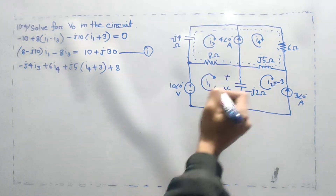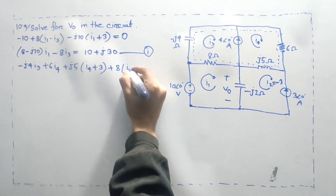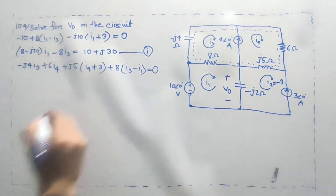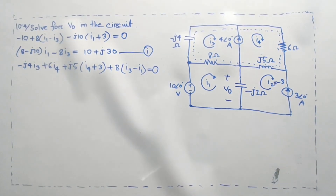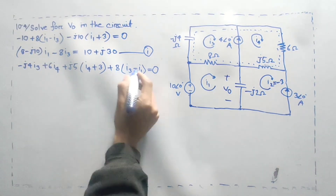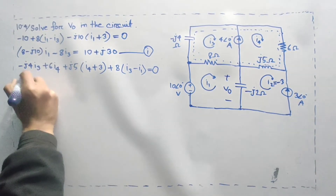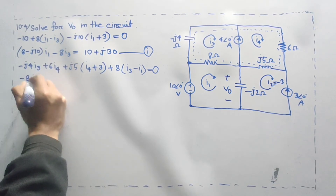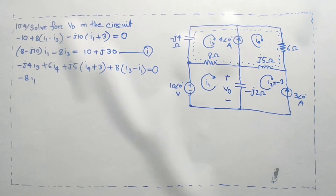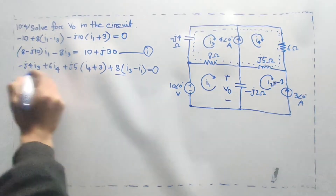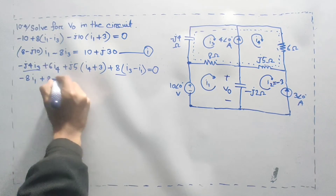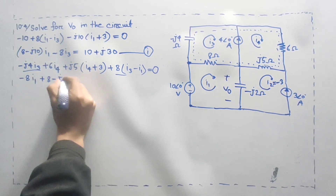i3·i1 plus 8(i3 minus i1) is equal to 0. If i1 is equal to i3 minus i1, then i1 is equal to i3 minus i4. So i1 equals i3, and i1 equals i3 minus i4 minus i3.